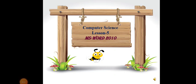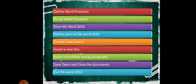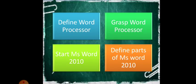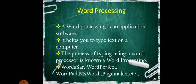Hello children, welcome. Today we are going to see Lesson 5: MS Word 2010. In this chapter we are going to cover the following topics: define word processor, grasp word processor, start MS Word 2010, define parts of MS Word 2010, create a document, insert a new line, select and delete text and paragraphs, save, open and close documents, and exit MS Word 2010. In this video we will cover only a few of these topics; the remaining topics will be covered in the next video.